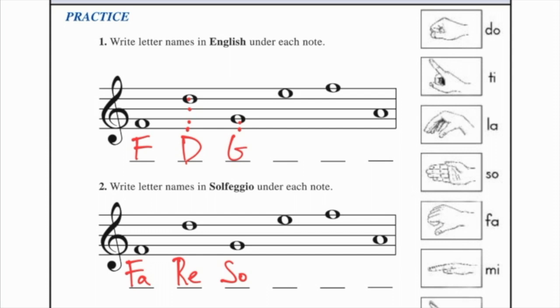Fourth space, what rhymes with space, face, F, A, C, E, and E in solfeggio is MI.